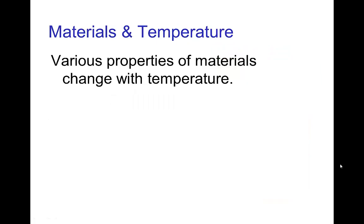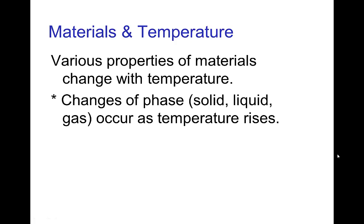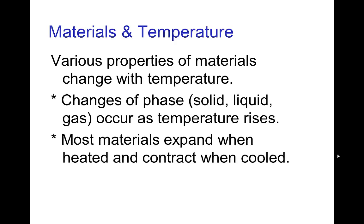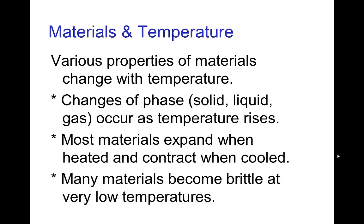The properties of materials vary with temperature. One example is a change of phase — solid ice as we raise the temperature becomes liquid water, and then as we raise the temperature further it boils and becomes steam. Another property that changes is that most materials tend to expand when heated and contract when cooled. Many materials also become brittle at very low temperatures, and there are other properties that vary with temperature such as color.